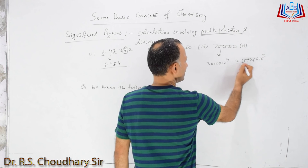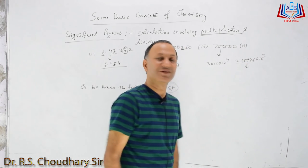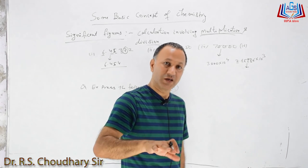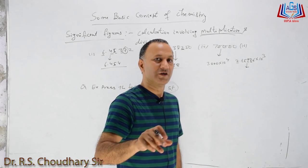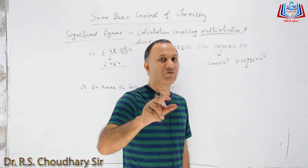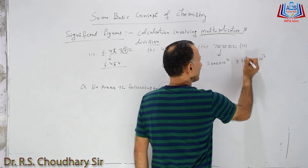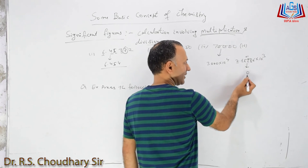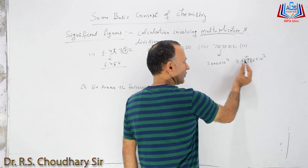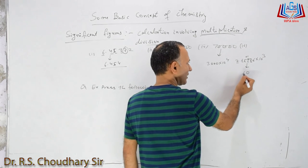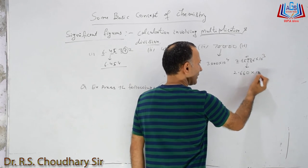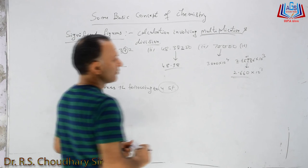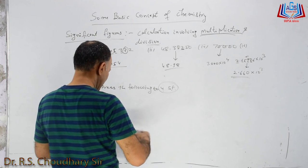Fourth: 2.65986 × 10³. We take 4 significant figures: 1, 2, 3, 4 — that is 2.659. The next digit is 8, which is more than 5, so we add 1. 9 + 1 = 10, so we write 0 and carry 1 forward, making it 2.660 × 10³, wait — that gives 2.660, so the answer is 2.660 × 10³, which has 4 significant figures.